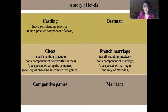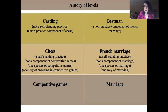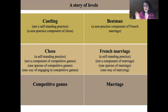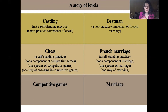Now take best man or honeymoon. Best man or honeymoon, analogous to castling or checkmate, is not a self-standing practice. It is a composing part of some special forms of marriages — for example, anglospheric marriages or French marriages. It is a non-practice component of French or anglospheric marriages, and it takes its significance from within the context of those forms of marriage.